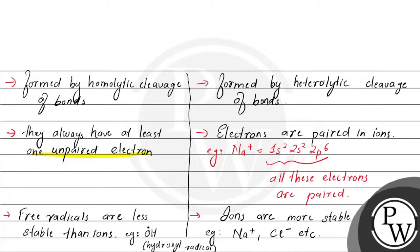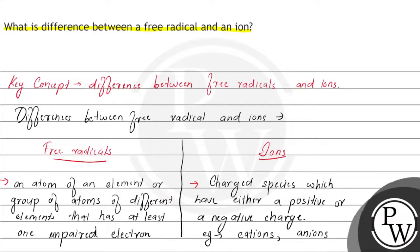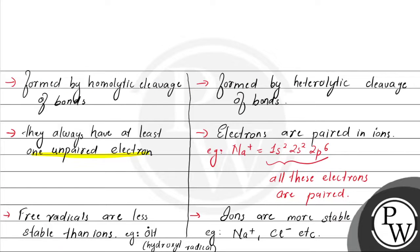So, these are the major points of differences between free radicals and ions. The major point being, free radicals mein unpaired electron present hote hain, aur ions mein sare electrons paired state mein hote hain. Free radicals are formed by homolytic cleavage of bonds, aur ions heterolytic cleavage of bonds se form hote hain. These are the main points of differences. I hope aap ko samajh aa gaya ho.